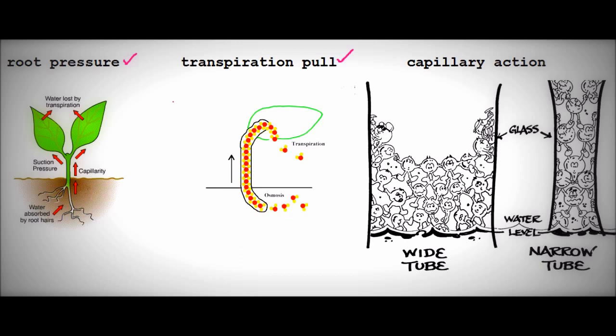So basically as the molecules are lost at the top of the column the whole column is pulled up as one chain. This creates the transpiration stream which is another important concept to learn.